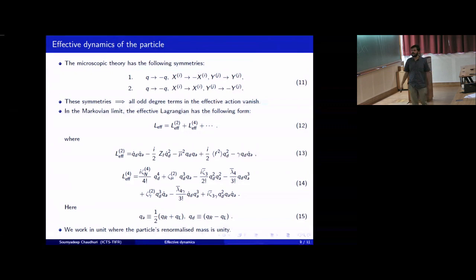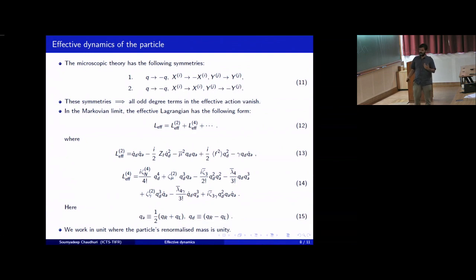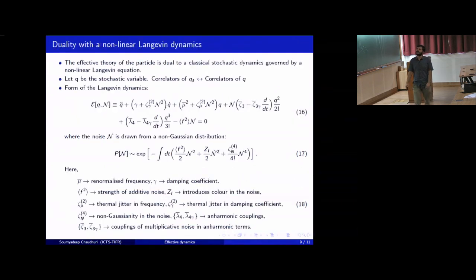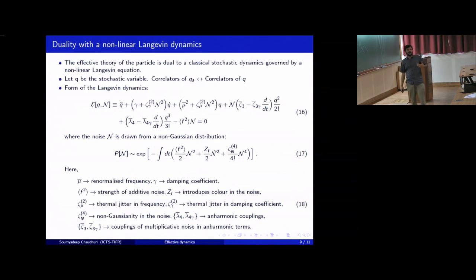We work in units where the particle's renormalized mass — the mass after taking into account the contribution of the bath and the particle-bath interaction — is unity. One can show that this quantum effective theory of the particle is actually dual to a classical stochastic dynamics governed by a non-linear Langevin equation.